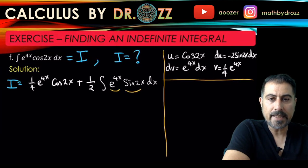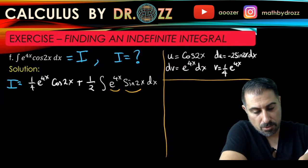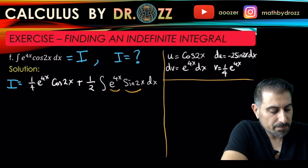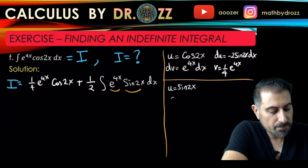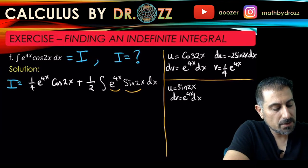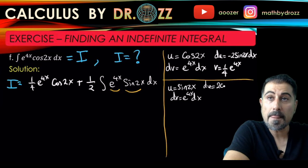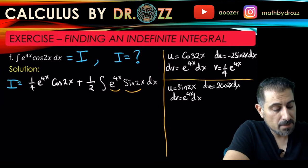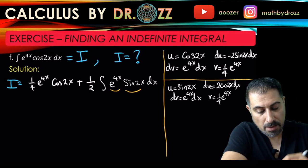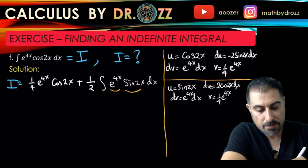That's LIATE. I should call u right now, a brand new u, to be sine 2x and dv would be the leftover e to the 4x dx. So here du will be 2 cosine 2x dx, and then v is one-fourth e to the 4x.